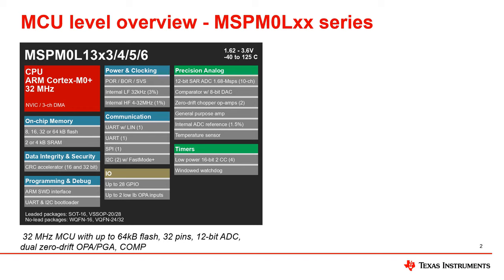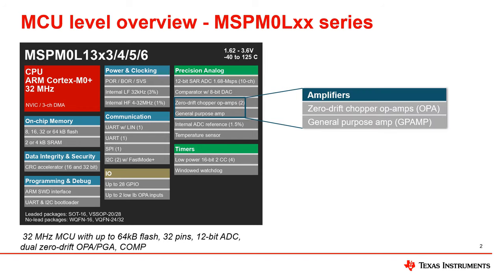The MSPM0L13xx supports up to 32 MHz for the clock speed, up to 64 KB of flash, and provides rich analog peripherals. From the device overview we can see that there are two types of op amp peripherals on the MSPM0L13xx. The first type is the zero drift chopper op amps, which we refer to as OPA in the documentation. The other type is the general purpose amp, which we call GPAMP. The slides that follow will use the same names.